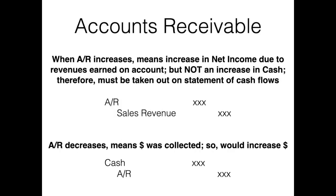On the operating activity section of the statement of cash flows we're analyzing the current assets, current liabilities, depreciation, and gains and losses — because we're adjusting net income. Net income includes all cash sales, all sales on account, all cash expenses, and all incurred or accrued expenses. So let's take a few accounts and analyze them to see how they would be affected on the statement of cash flows.